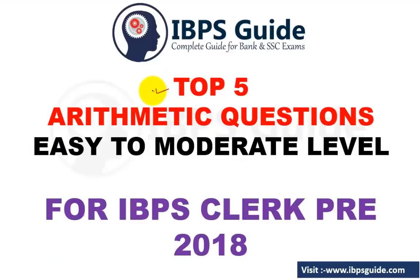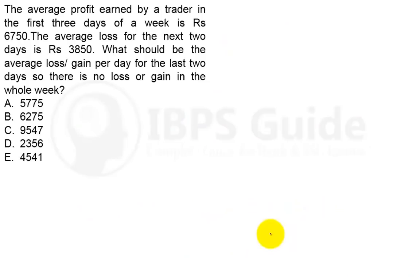Hello everyone, welcome to ivpsguide. In this particular video, we will see the top 5 arithmetic questions, easy to moderate level, for IBPS Club Pre-2018. So without further delay, let's see the first question. The average profit earned by a trader in the first three days of a week is rupees 6750.